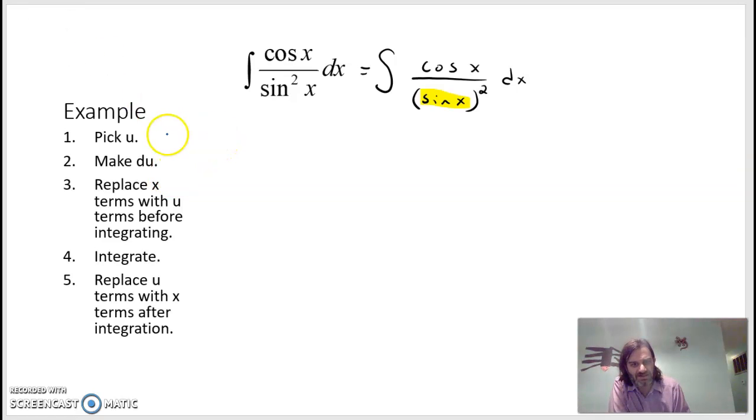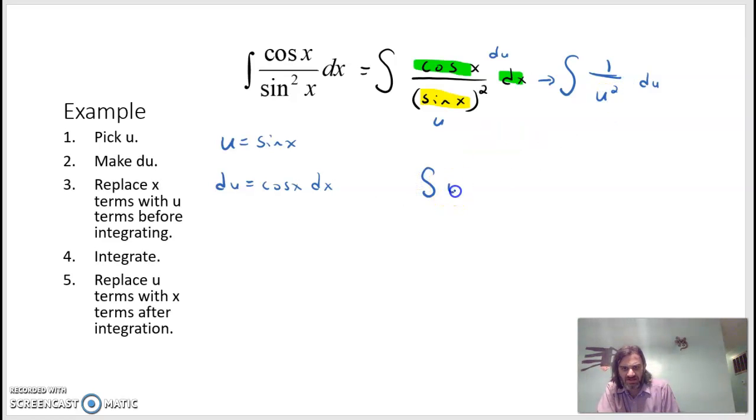So if we let u be sine of x, du is cosine of x dx. Sometimes they work out great. Sometimes they don't. These examples are working out really good for us. So sine of x is u, cosine x dx is du. So we'll rewrite this as the integration of 1 over u squared du. So let's rewrite that. That would be an integration of u to the negative 2 du. So in that case, it would be u. When we integrate, we'll increase the exponent by 1. So u to the negative 1, and then divide by 1. So minus u to the negative 1 plus C.